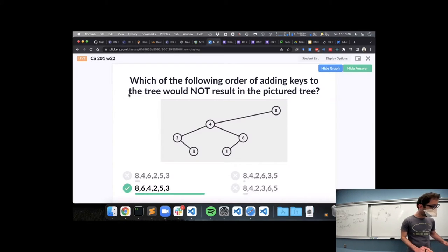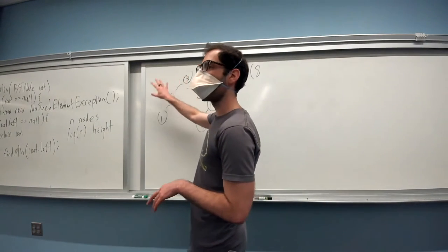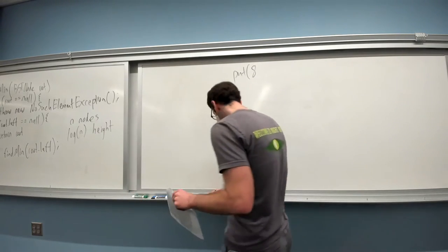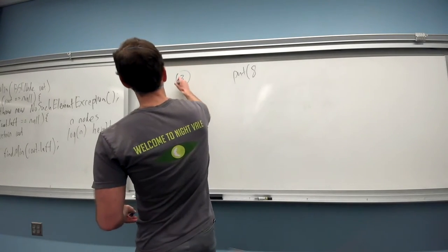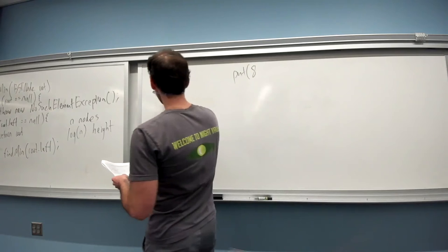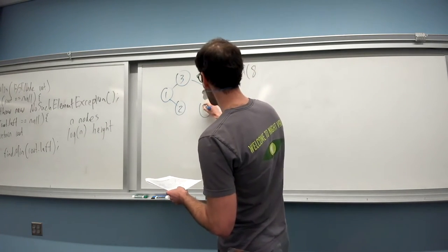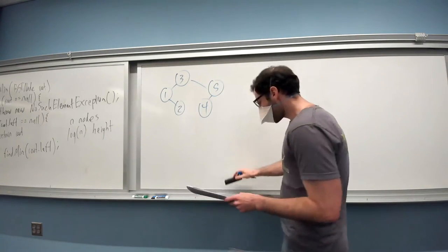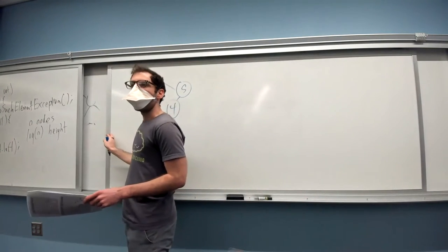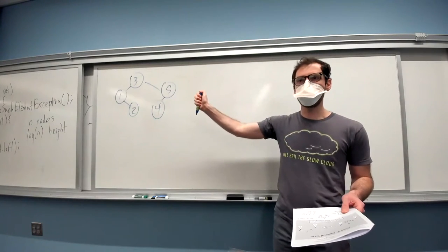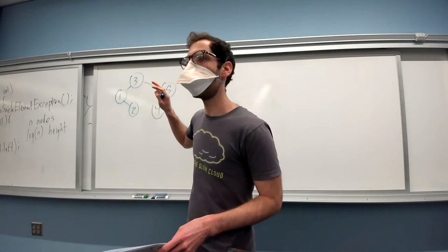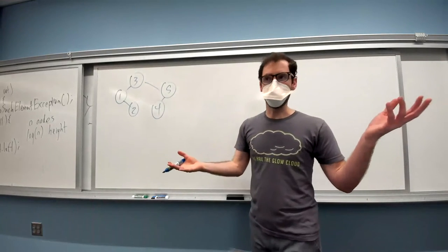Now let's talk about how we can traverse the values in a binary search tree. I'll redraw this tree with values 1, 2, 3, 4, 5. The tree keeps these values in order, but if we want to print them out in sorted order, it's not immediately clear how we would go through the tree to get them out that way. This is where our tree traversals come into play.